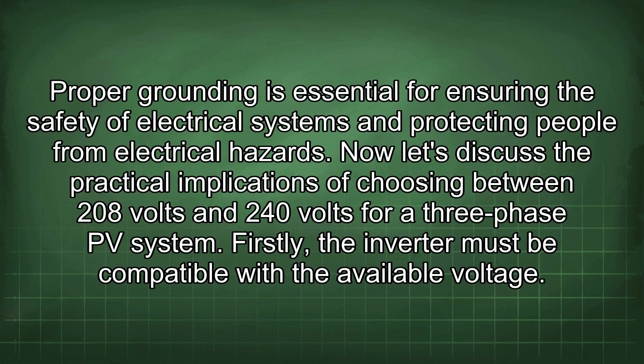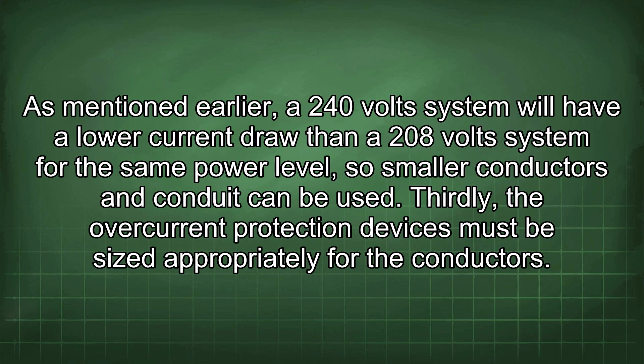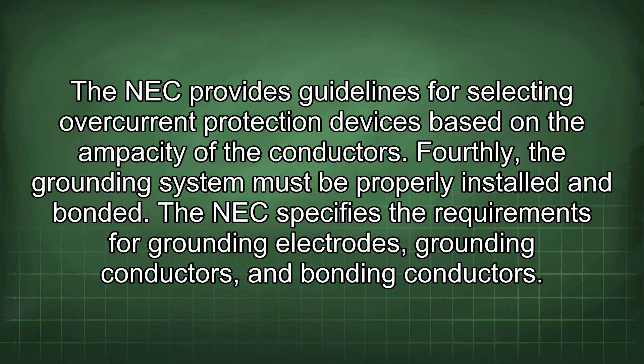Now let's discuss the practical implications of choosing between 208 volts and 240 volts for a three-phase PV system. First, the inverter must be compatible with the available voltage — most inverters can be configured for either 208 volts or 240 volts, but it's essential to verify this before purchasing. Second, the wiring and conduit must be sized appropriately for the current draw of the inverter. A 240-volt system will have a lower current draw than a 208-volt system for the same power level, so smaller conductors and conduit can be used. Third, the overcurrent protection devices must be sized appropriately for the conductors per NEC guidelines.